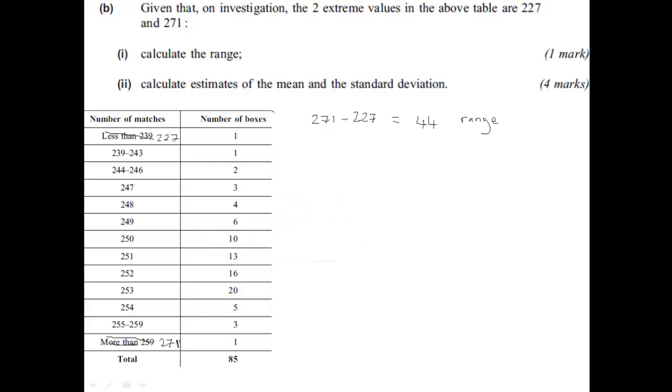To do this, we need to use the graphic display calculator. We put these numbers into list 1 in stats mode. We then put these numbers into list 2. And we then make sure that it's set up so that the two are multiplied together by using list 2 as the frequency. These are the frequency. These are how many of each of these numbers we want. I'll show you how to do this on the graphic display calculator.